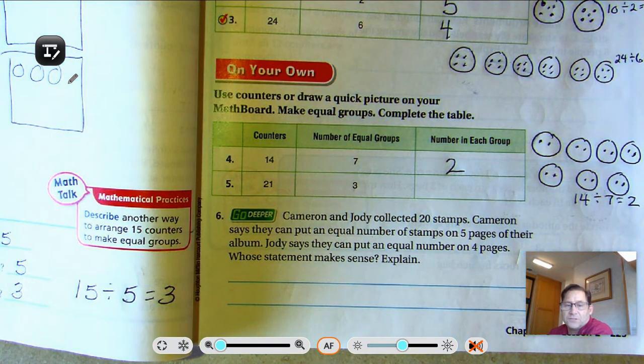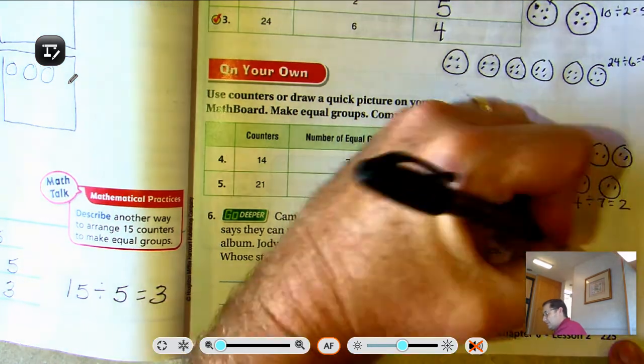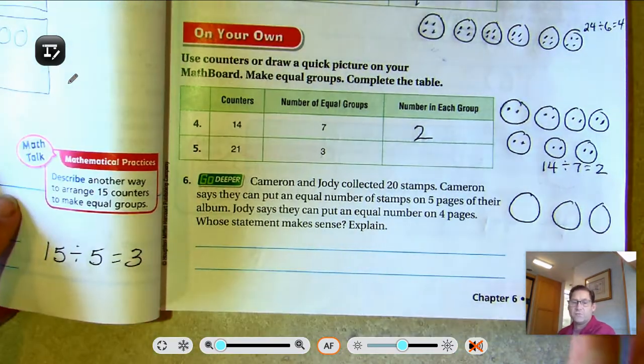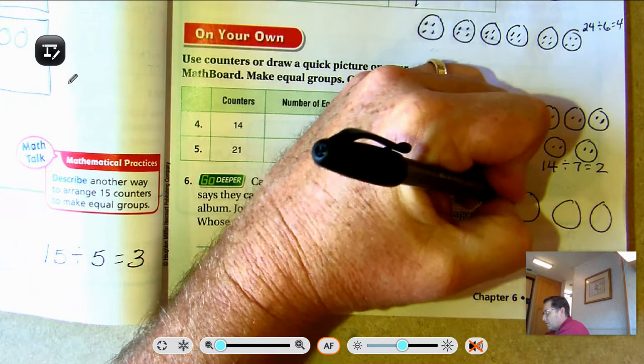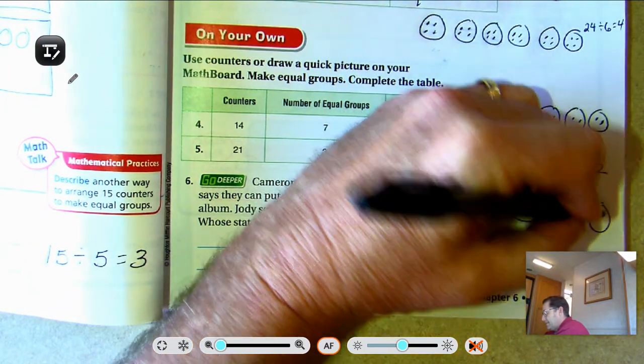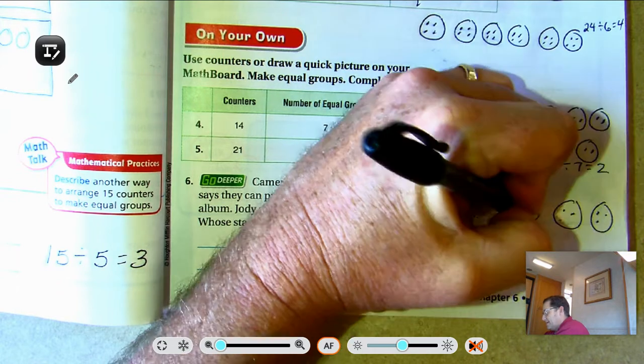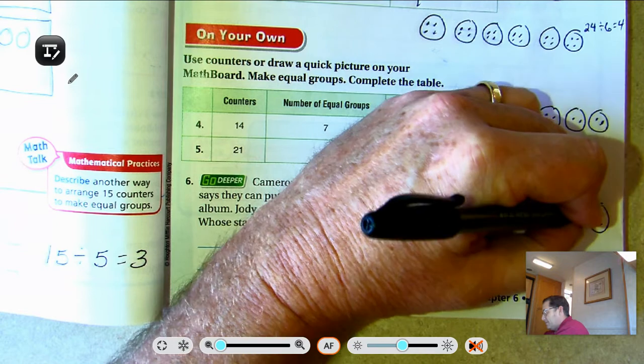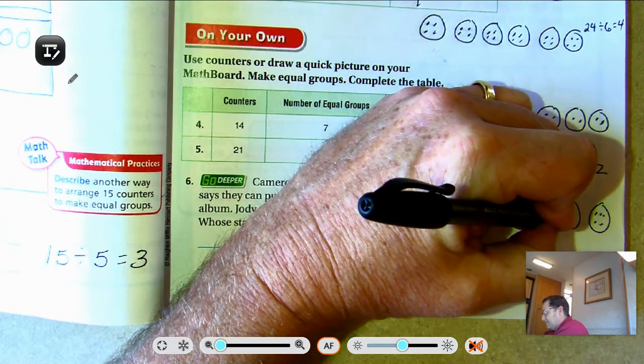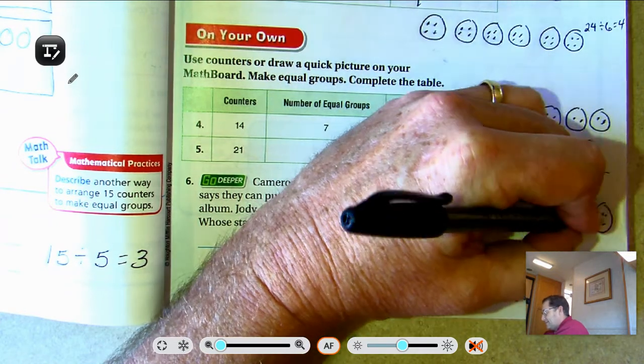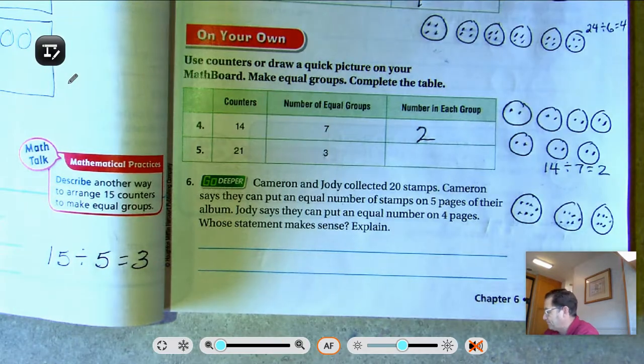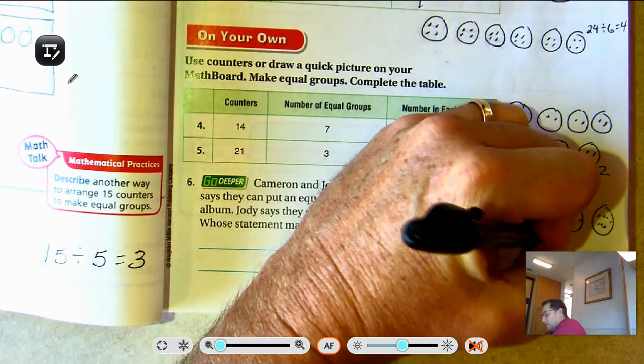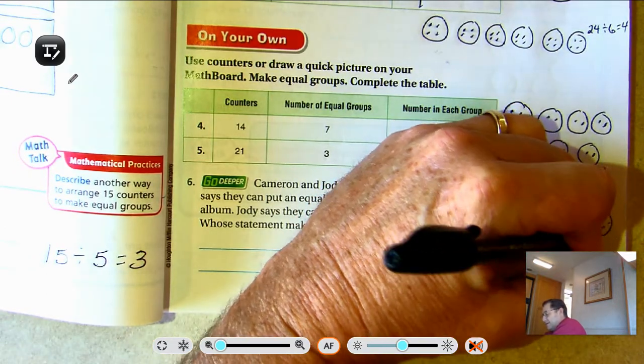That division problem was 14 divided by 7. And 21 counters shared with 3 equal groups. Okay, so 3 circles represent my 3 equal groups. And I'm going to share 21 counters: 6, 9, 12, 15, 18, 21. So there are 7 in each group. 21 divided by 3 equals 7.